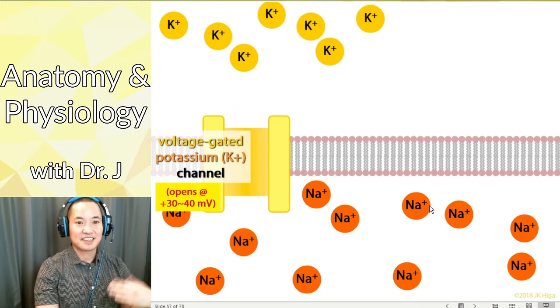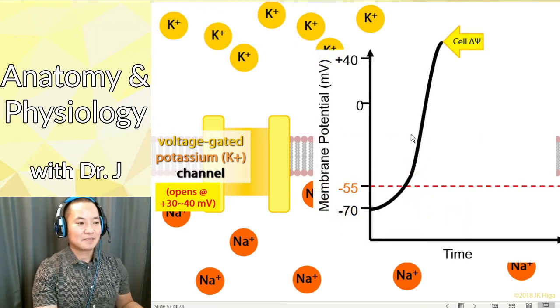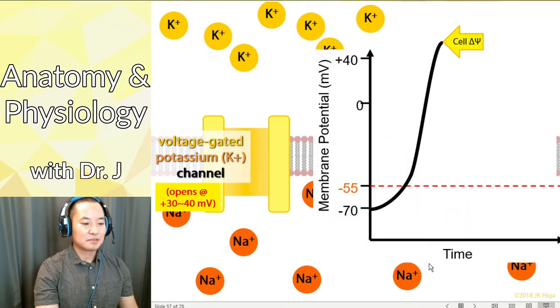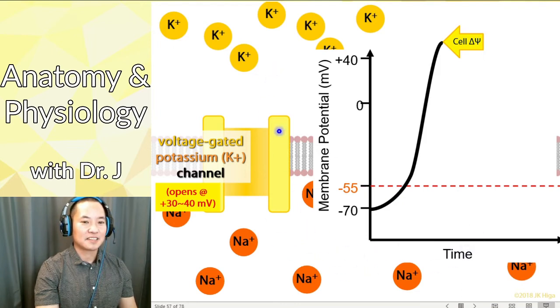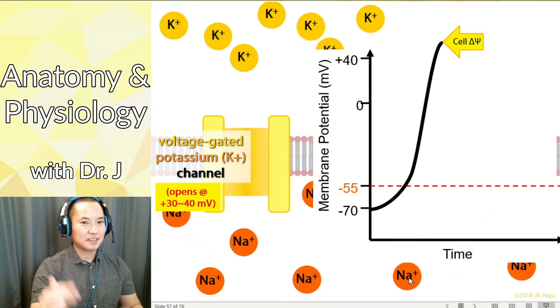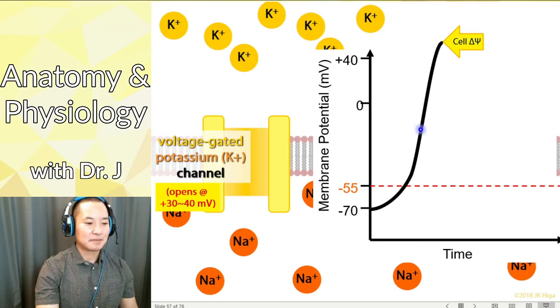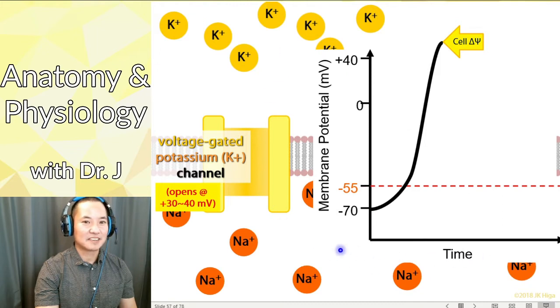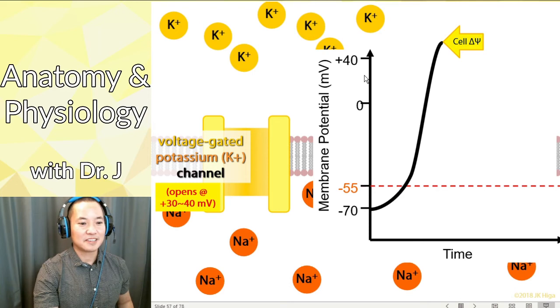So now we're at this point right here and we're at way above plus 40 millivolts, so these channels are going to open. Now when these channels open, what happens? Well, again, in the cell at rest you have more potassium on the inside. When you open up these channels, the potassium will diffuse toward the outside. I'm not showing potassium on both sides just for simplicity's sake.